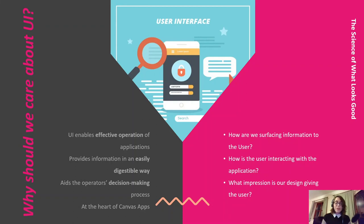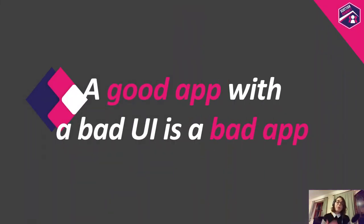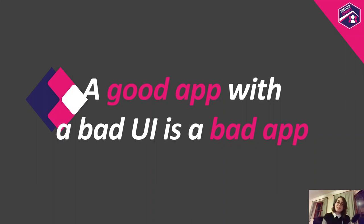These are the questions we need to consider when designing UIs: how are we surfacing information to the user, how could we improve that, what is the experience the user is having, how are they interacting with the application — actively or passively — and what impression is our design giving? Your UI will be the first thing your users notice and will have the biggest impression on them. This leads us to: a good app with a bad UI is a bad app.